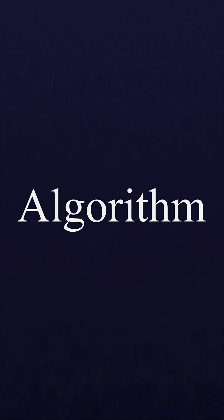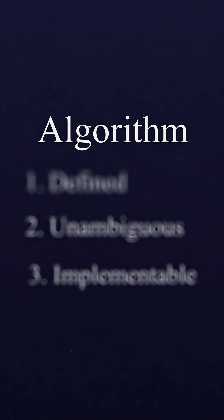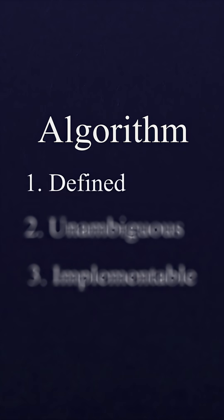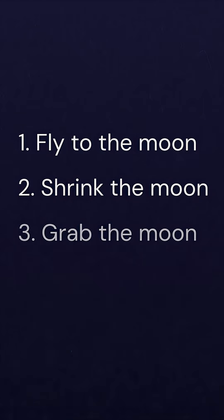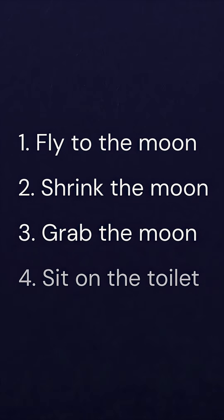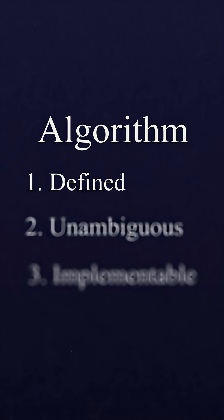An algorithm must be three things. First, defined — there must be a specific sequence of steps that can be taken to perform the task. It must be unambiguous.